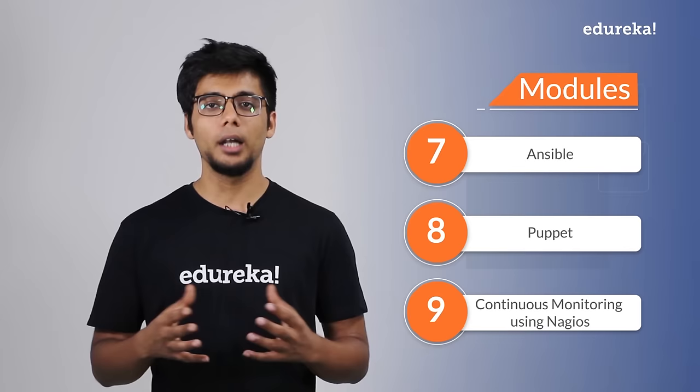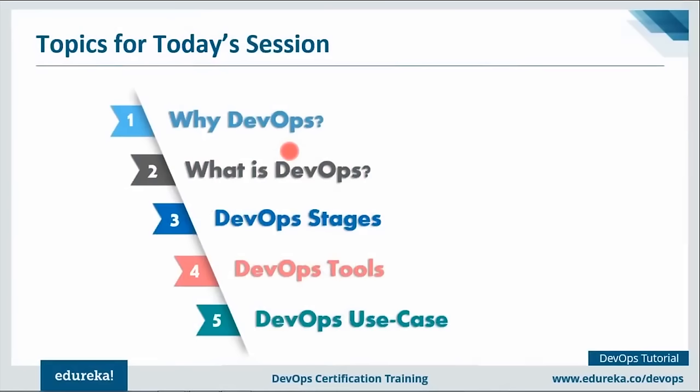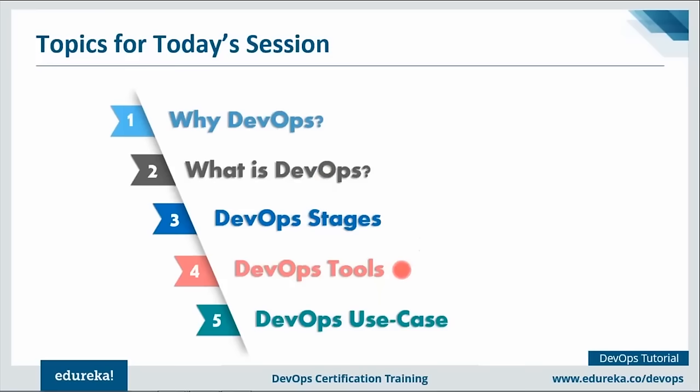Let's begin by understanding what is DevOps. We'll first look at why we need DevOps - everything exists for a reason, so we'll figure that out. We'll see the limitations of traditional software delivery methodologies and how DevOps overcomes them. Then we'll focus on the DevOps methodology, its stages and tools, and finally a hands-on part creating a Docker image, building, testing and pushing it to Docker Hub using Jenkins.